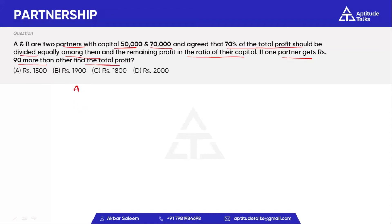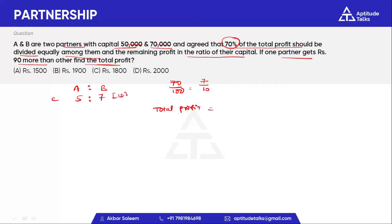The capital is 50,000 and 70,000. The ratio of 50,000 to 70,000 is 5 to 7. To find the LCM of 12 and 10, the LCM is 60. So total profit is represented as 60 parts. In these 60 parts, 70% equals 7 by 10, and 7 by 10 of 60 is 42.